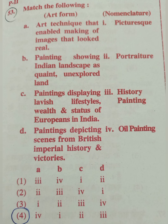Question 53: Match the following art forms with their descriptions — A: art technique enabling images that look real; B: paintings showing Indian landscape as quaint unexplored land; C: paintings displaying lavish lifestyle of Europeans in India; D: paintings depicting scenes from British imperial history. The correct answer is option 4. Option A matches with oil painting.